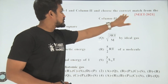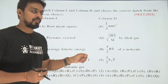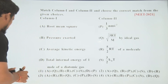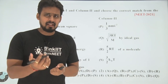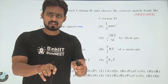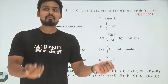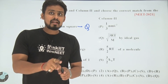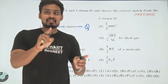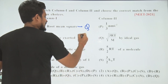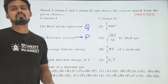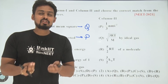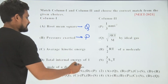Match column 1 and column 2. The first entry is root mean square speed, which equals √(3RT/M), where R is the gas constant, T is temperature in Kelvin, and M is molecular weight — this matches Q. Pressure exerted: the kinetic gas equation is PV = (1/3)MN·v_rms², and taking V to the other side, this maps to P.